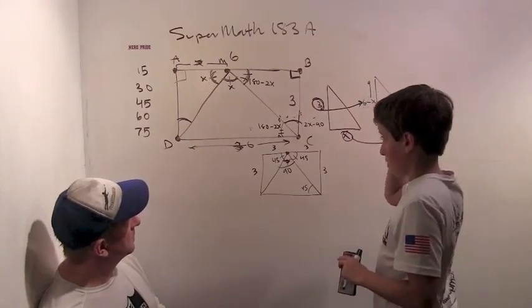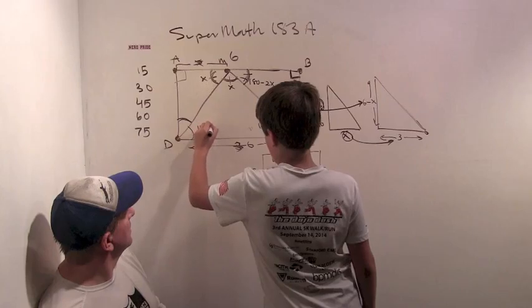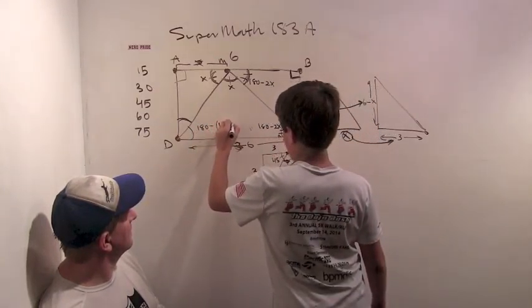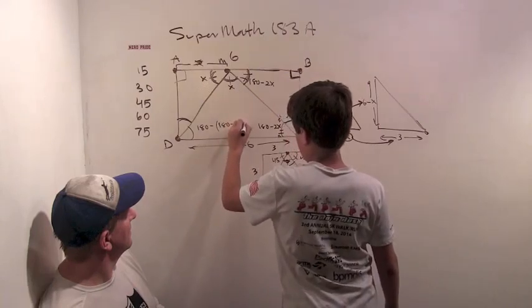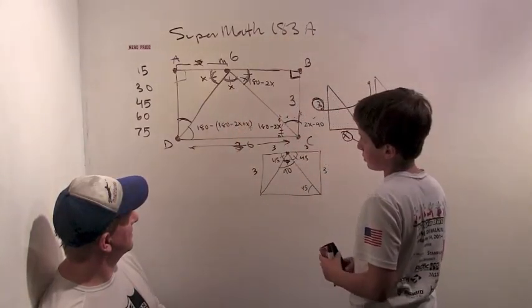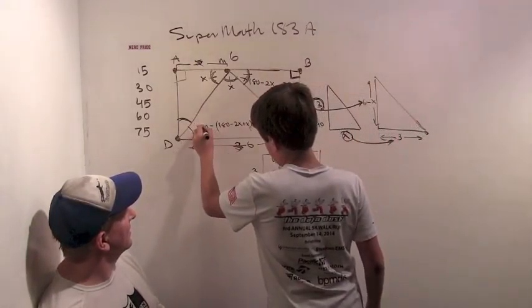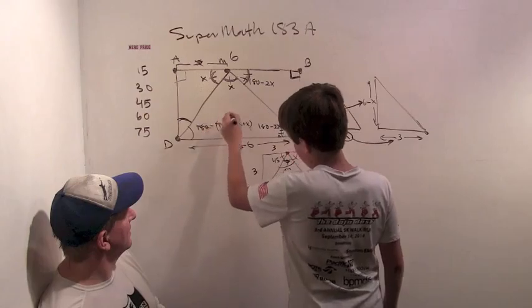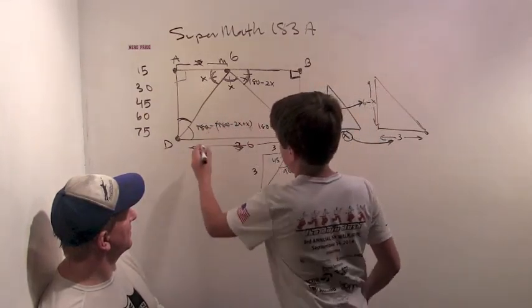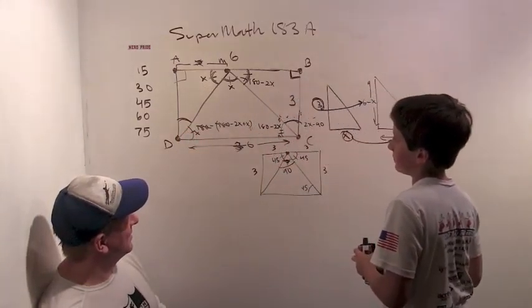And then this is 180 minus... 180 minus 2X plus X. So... Which is a very complicated way of writing. The 180s are going to go away. And then the minus... plus 2X minus X. This is X.